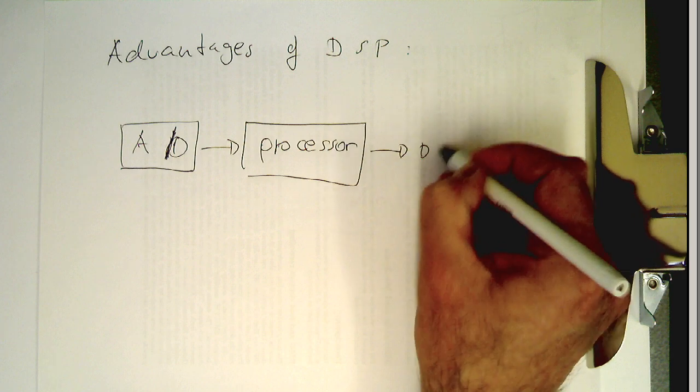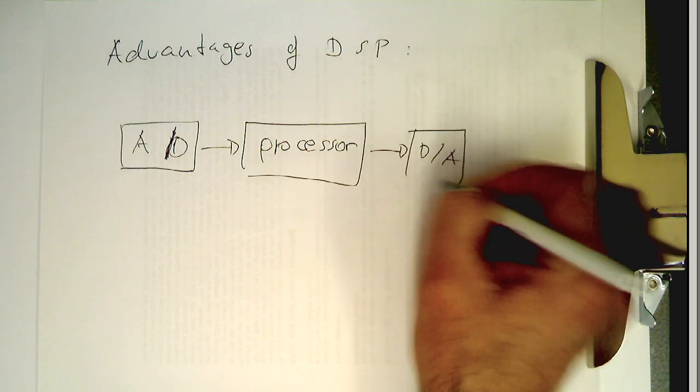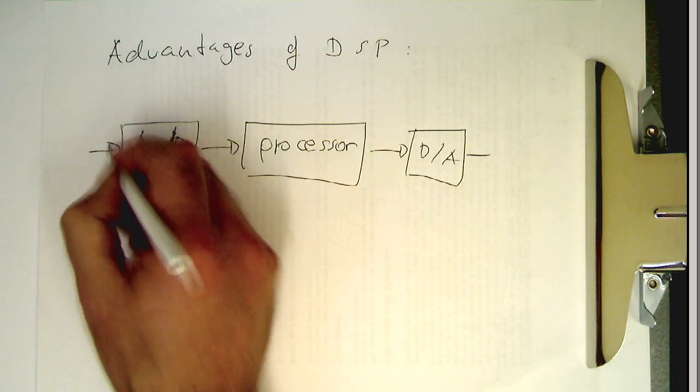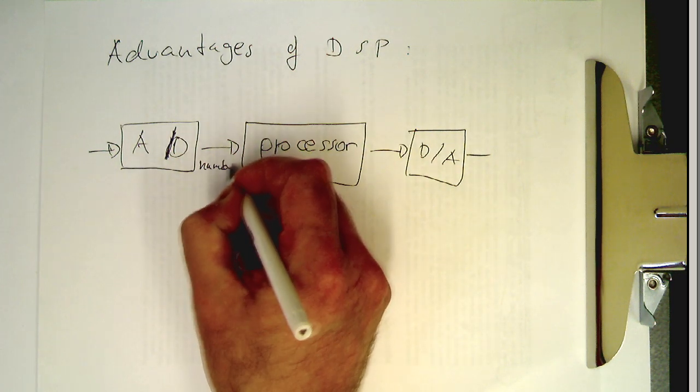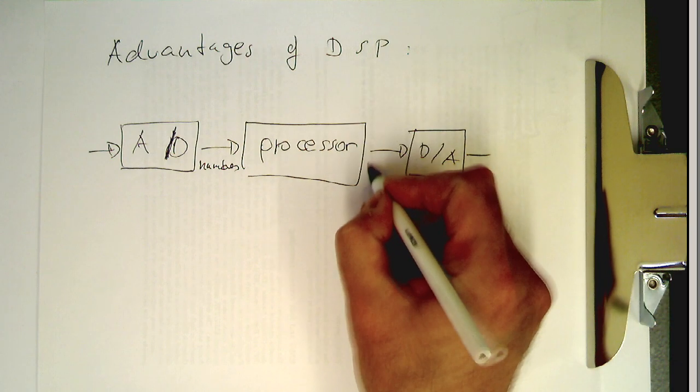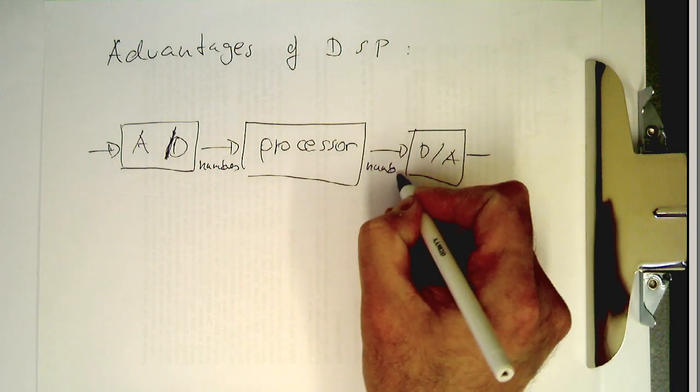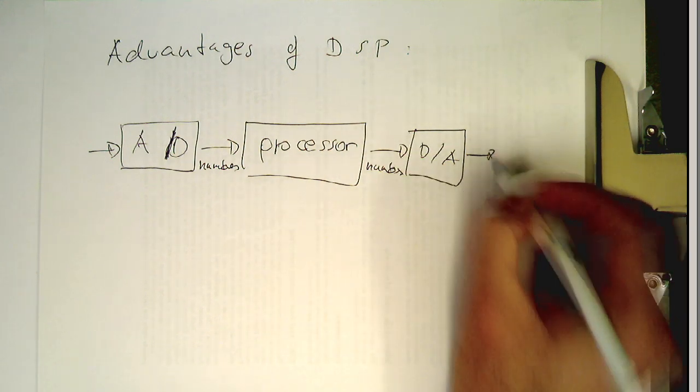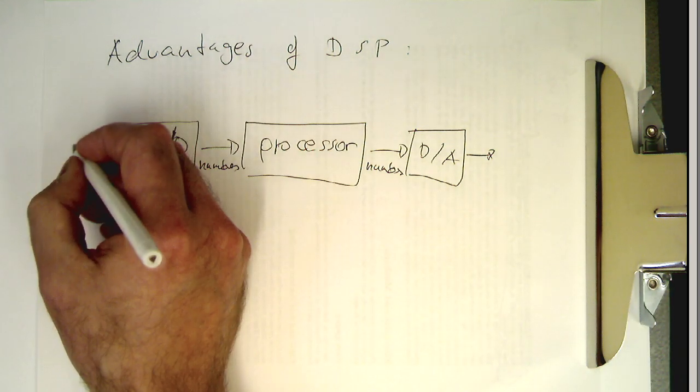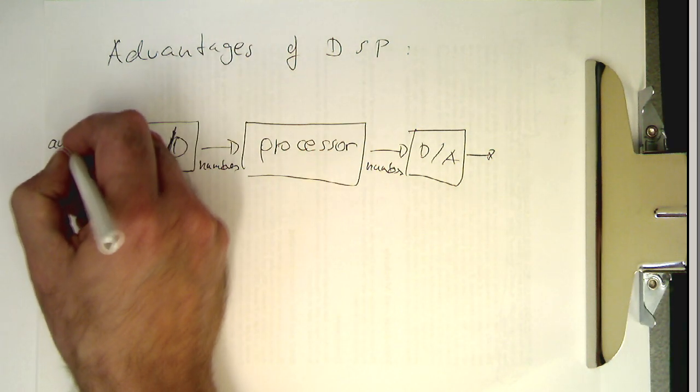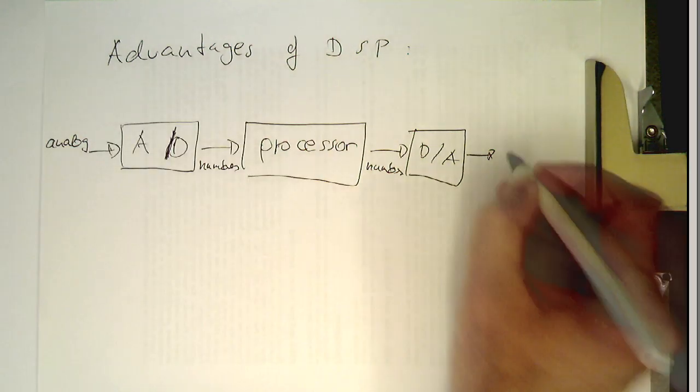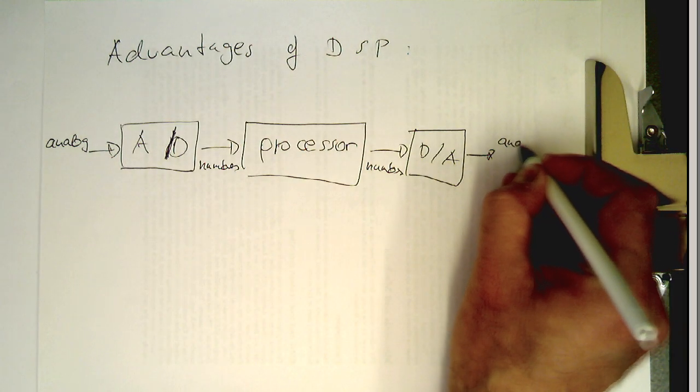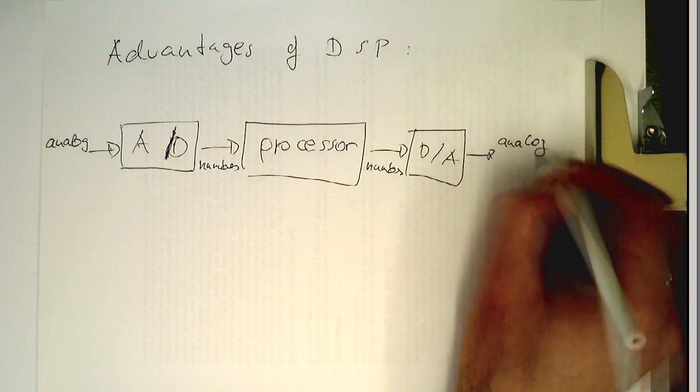We have the DA converter at the output. Remember, these are just numbers transmitted here, and there are also numbers here. Then this is analog output, and this is again analog output.